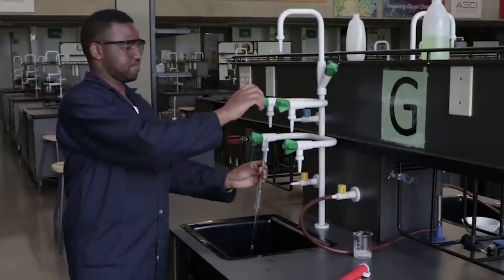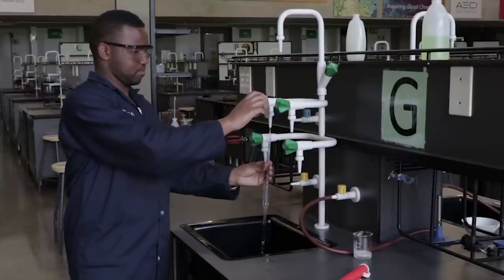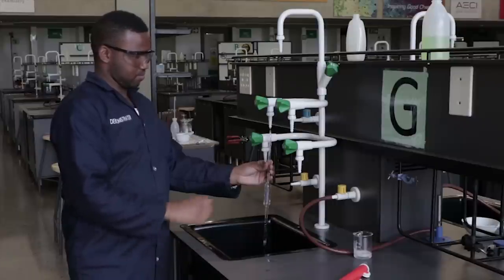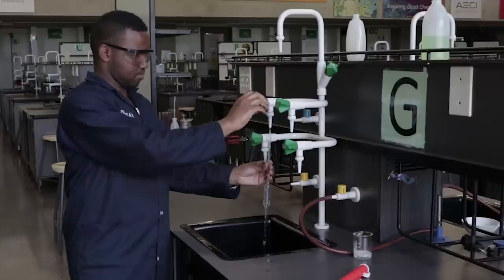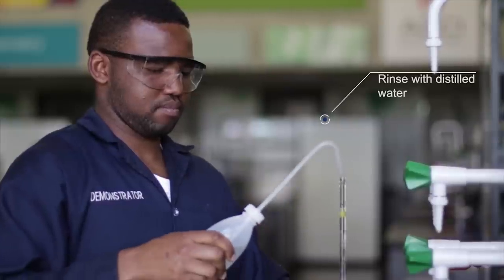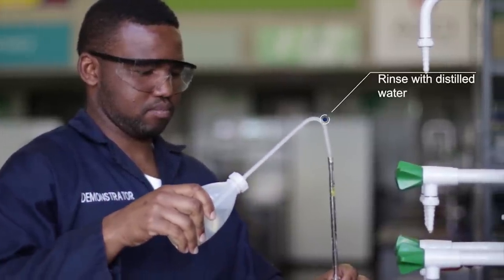The pipette is then inverted and the tip is held under a gentle running tap. This process is done for about a minute and the pipette is considered clean when the water droplets do not stick to the inner surface of the pipette. At this point, the pipette is rinsed with distilled water from the washing bottle to remove any remaining tap water.